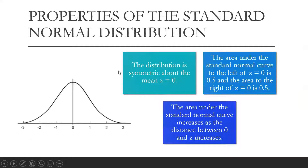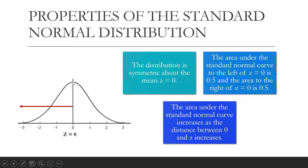The properties of the standard normal distribution are the following. The distribution is symmetric about the mean z equals 0. Since the area of the normal curve is equal to 1 and the distribution is symmetric about the mean z equal to 0, it follows that the area from z equal to 0 to the left is equal to 0.5 and the area to the right of the mean z equal to 0 is equal to 0.5. And the last property is that the area under the standard normal curve increases as the distance between 0 and z increases.